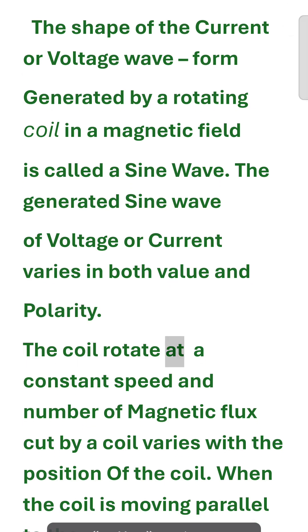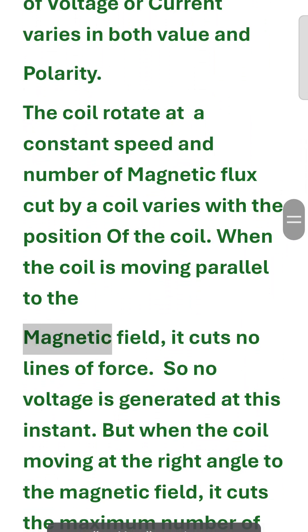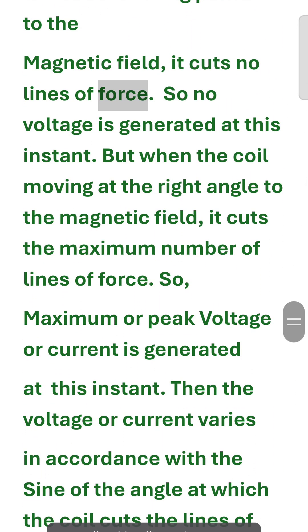The coil rotates at a constant speed and the number of magnetic flux lines cut by the coil varies with the position of the coil. When the coil is moving parallel to the magnetic field, it cuts no lines of force, so no voltage is generated at this instant.